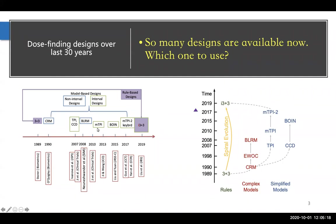I developed the MTPI design as an improvement over the TPI design. And later, more recently, there are other interval designs, including the Bayesian optimal interval design — the BOIN design — and more recently the MTPI-2 design, which turns out to be the equivalent of the keyboard design. The most recent one based on my own work is the I3+3 design.